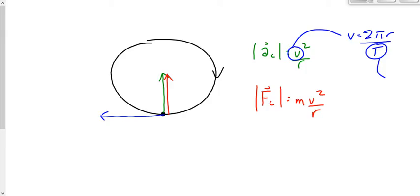If we don't even have the period, we can find it as time over the number of cycles, or we can say T equals 1 over f. So generally, when we get a problem involving centripetal acceleration or centripetal force, we write down the equation. If we're missing a variable, we follow the same strategy we've used all year — we get that variable from another equation.